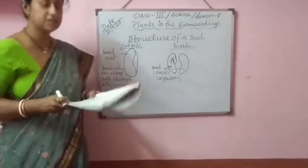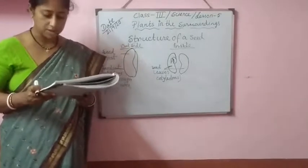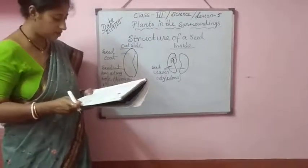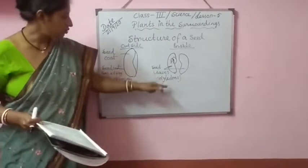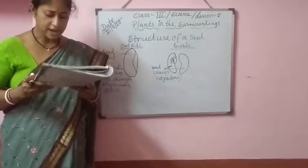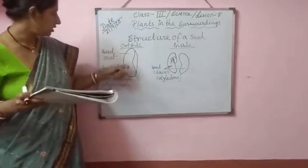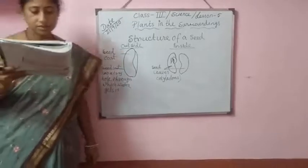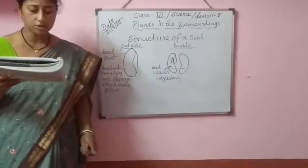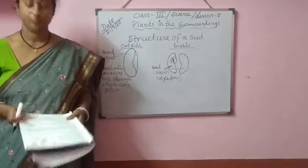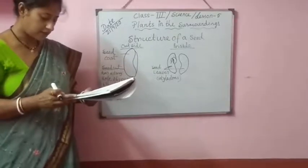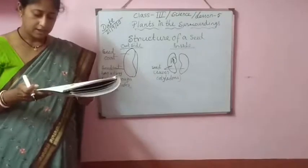All those seeds are different in size, shape, and colour, but they have common parts. These include the seed coat, the embryo meaning the baby plant, and the cotyledons. The seed coat is the tough and hard outer covering of the seed. It has tiny holes through which the seed gets water. It protects the embryo — the baby plant — inside the seed.